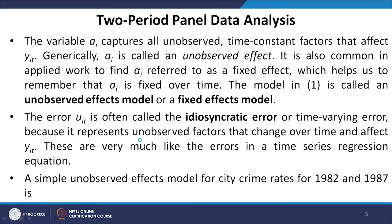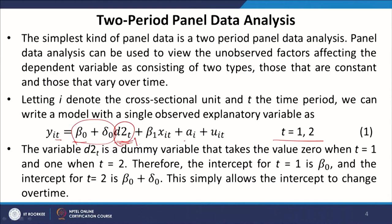The variable a_i captures all unobserved time-constant factors that affect y_it. Generally a_i is called an unobserved effect — the thing we are not able to observe. It is also common in applied work to refer to a_i as a fixed effect, which helps us remember that a_i is basically fixed over time. You can see that a_i does not have any time subscript, so it is a component free of time that remains constant over the period of analysis.